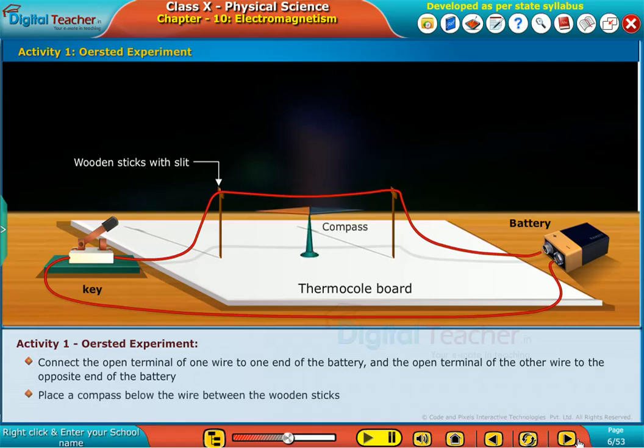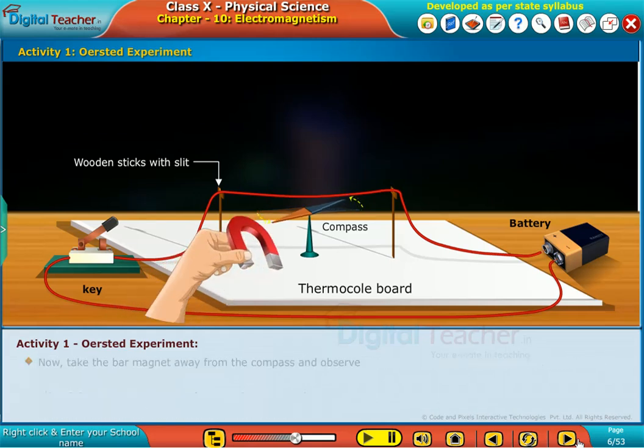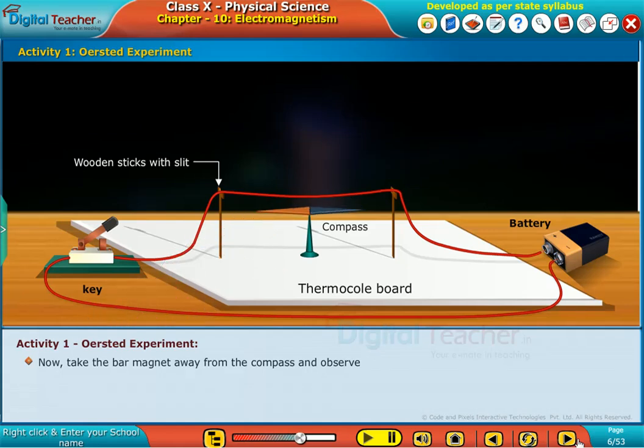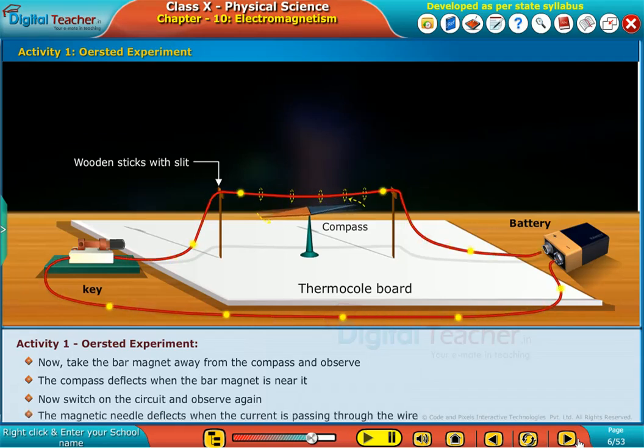Place a compass below the wire between the wooden sticks. Bring a bar magnet near the compass and observe. Now take the bar magnet away from the compass. The compass deflects when the bar magnet is near it. Now switch on the circuit and observe again. The magnetic needle deflects when the current is passing through the wire.